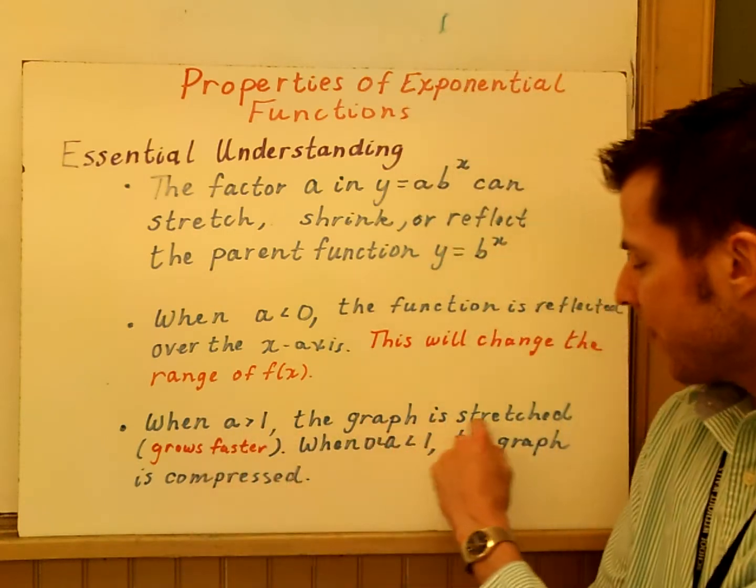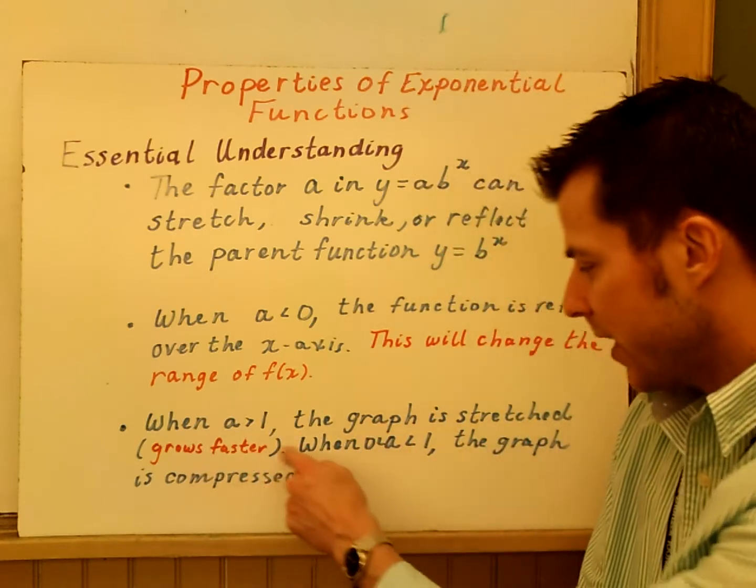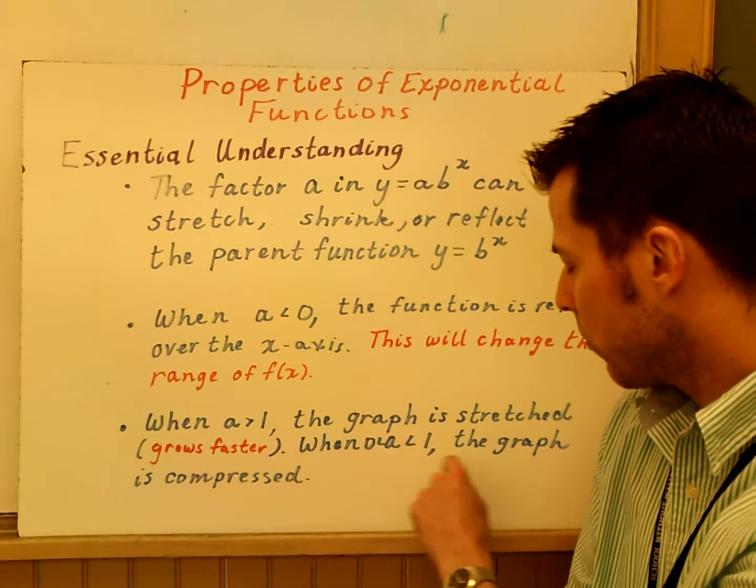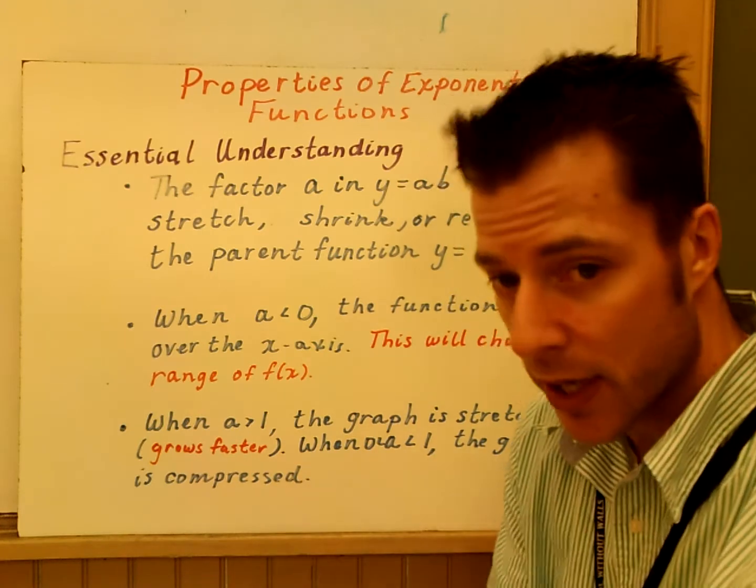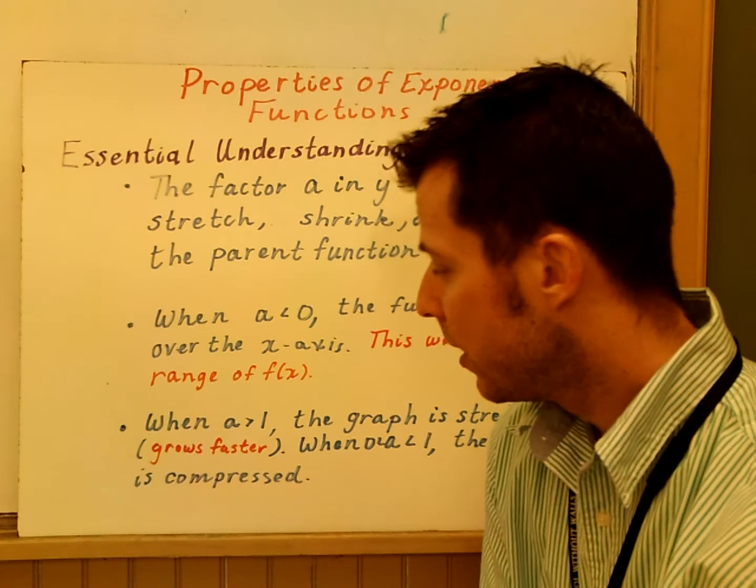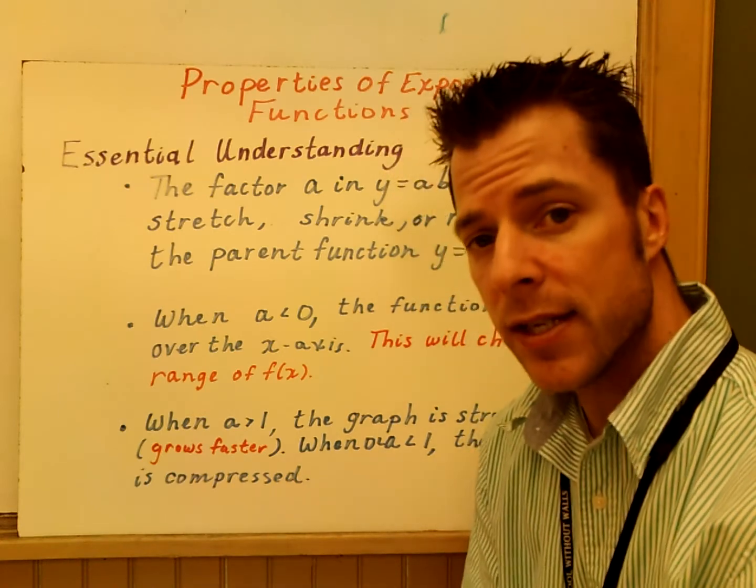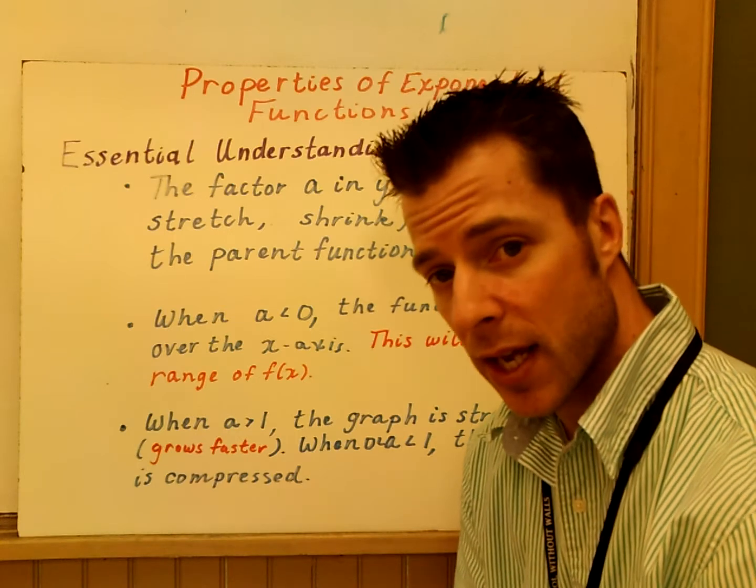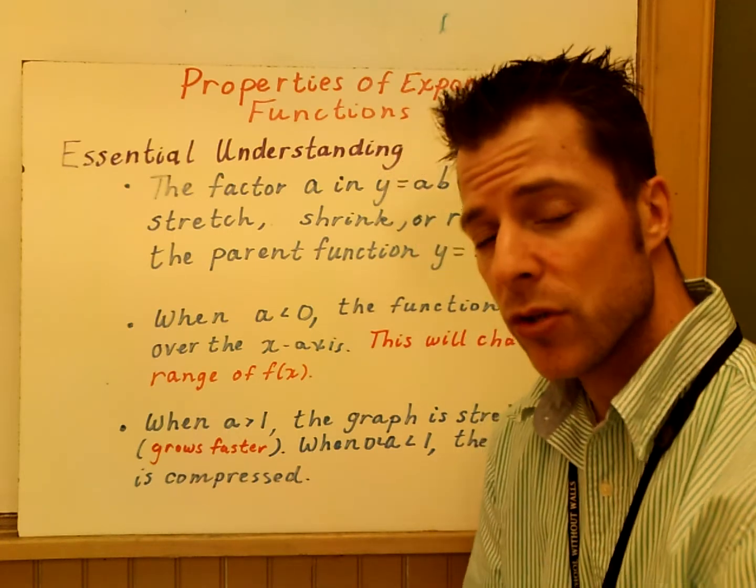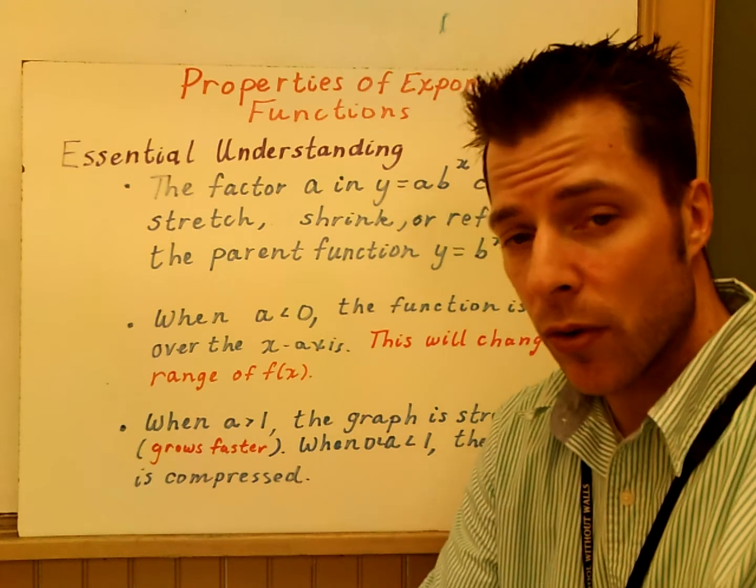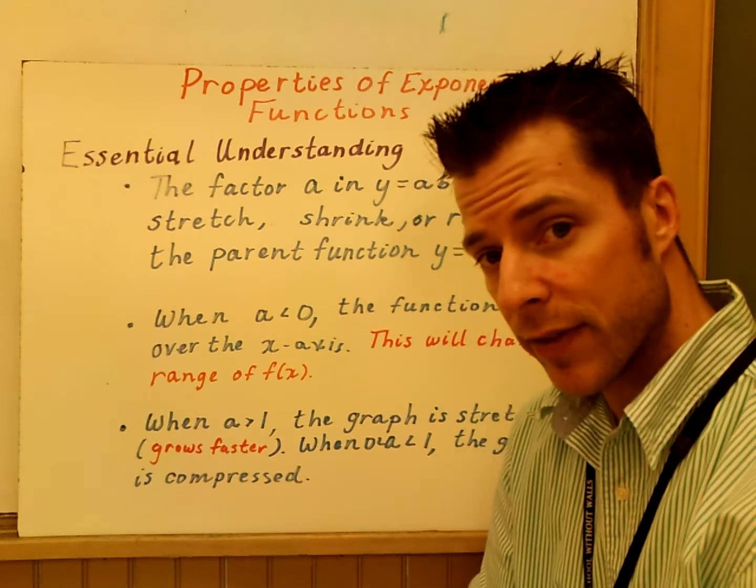When A is greater than 1, this graph is going to be stretched, that means it grows faster. And when A is between 0 and 1, the graph will be compressed, it'll grow at a slower rate. Now, just because A is between 0 and 1 does not mean that's going to be decay. Your B value tells you whether or not your function will be growth or decay. So just be very careful of that.